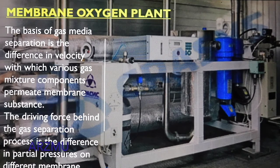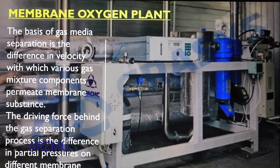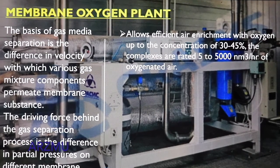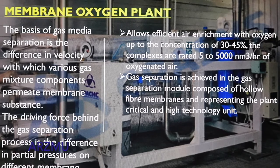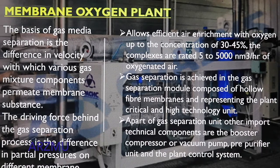Membrane oxygen plants allow efficient air enrichment with oxygen up to a concentration of 30 to 45%. The systems are rated 5 to 5000 normal cubic meters per hour of oxygenated air. Gas separation is achieved in the gas separation module composed of hollow fiber membranes, representing the plant's critical high-technology unit. Other important technical components are the booster compressor or vacuum pump, pre-purifier unit, and the plant control system.